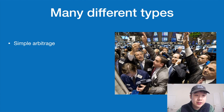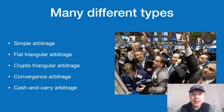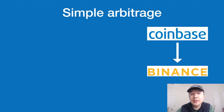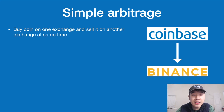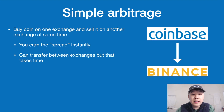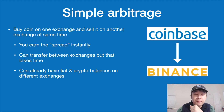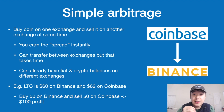There are many different types of arbitrage: simple, fiat triangular, crypto triangular, convergence, and cash and carry. Simple arbitrage is quite straightforward — you buy a coin on one exchange and sell it on another at the same time or close to it, earning the spread instantly. You can transfer coins between exchanges, though that takes time. Another technique is to hold fiat and crypto balances on both exchanges simultaneously. For example, Litecoin is $60 on Binance and $62 on Coinbase — buy 50 Litecoins on Binance and sell 50 on Coinbase for an instant $100 profit.